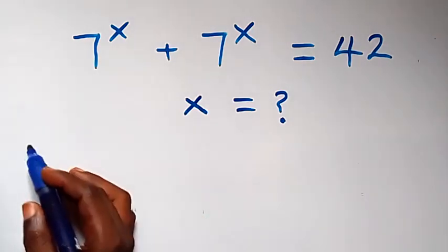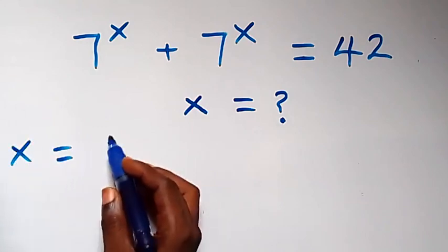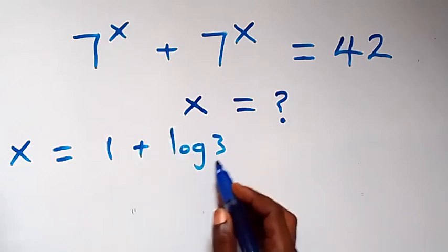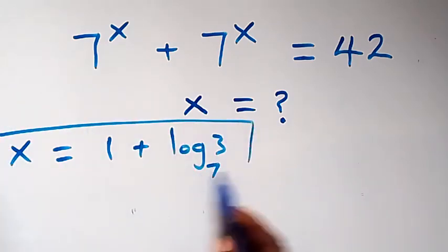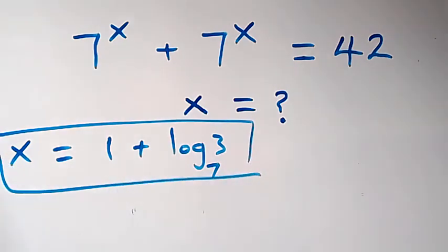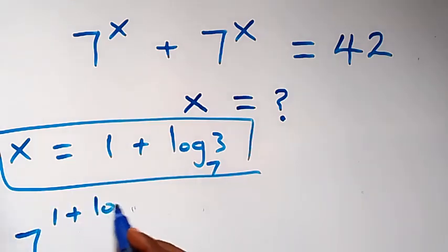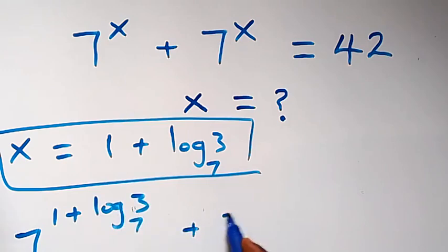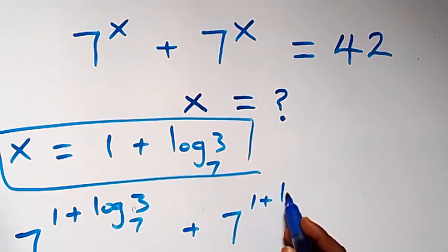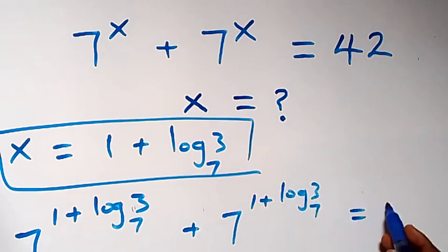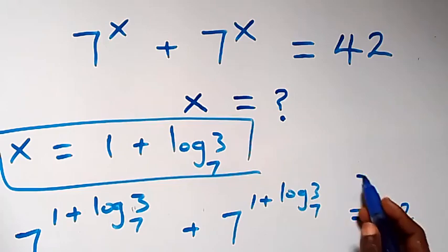So x equals 1 plus log 3 to base 7. To verify, the equation becomes 7 raised to power (1 plus log 3 to base 7) plus 7 raised to power (1 plus log 3 to base 7), which should equal 42.